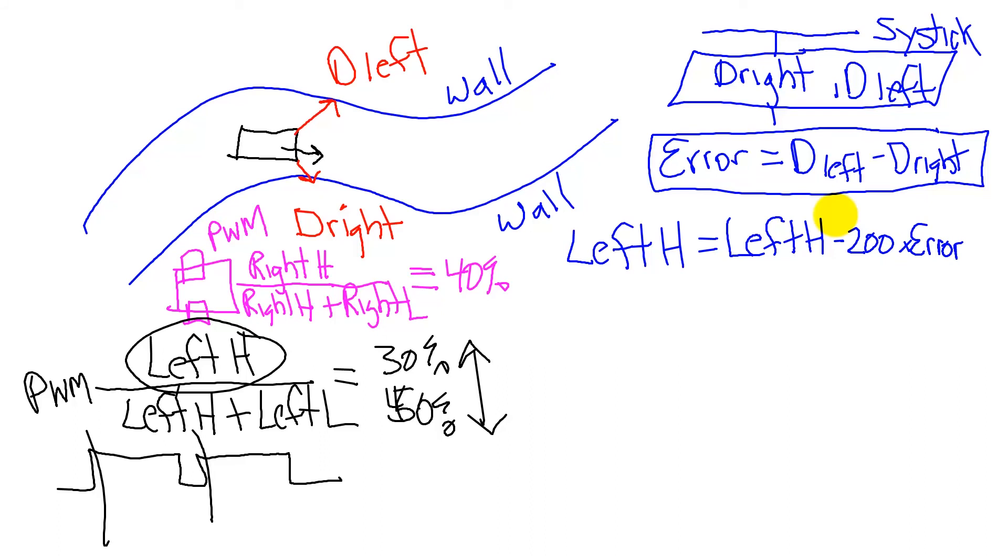So if I'm too far to the left, it'll turn right. If I'm too far to the right, it'll turn left. Notice what happens here if the error is equal to zero. What happens if the error, if I'm in the middle of the road, what does my control system do? So if the error is equal to zero, the left high stays put. It doesn't change.